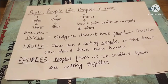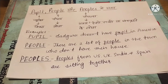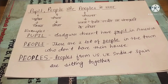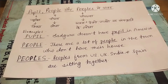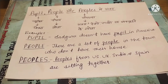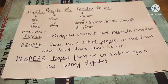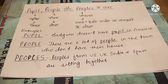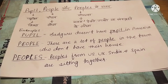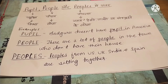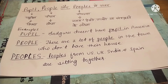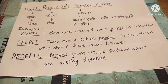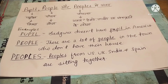Ab dekho, peoples kya hain? Peoples ka matlab kya hota hai — alag-alag deshon, rajyon ya sanskriti ke jo log hote hain, community ke jo log hain, unke liye hum log peoples word use kar sakte hain. People toh plural word hai hi, but peoples — yeh aur kaisa plural word hai? Yeh alag-alag deshon, rajyon ya sanskriti ke logon ko bataya jata hai. Toh uske liye hum log yeh use karte hain: peoples. Yeh bilkul sahi word hai, koi galat nahi hai.